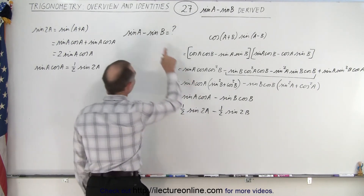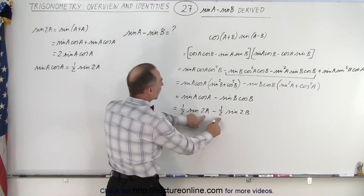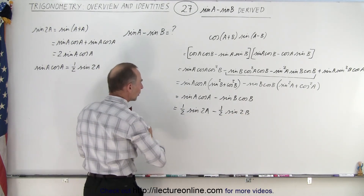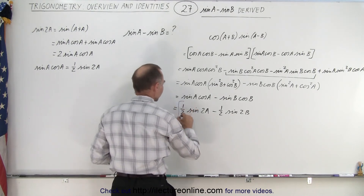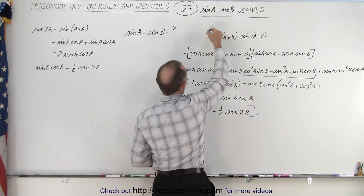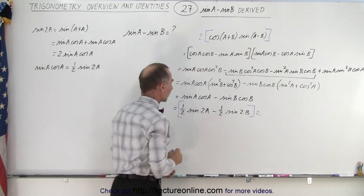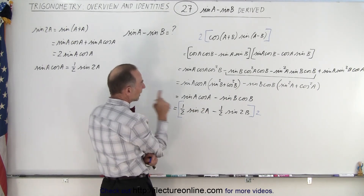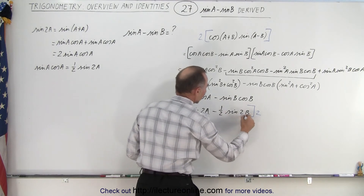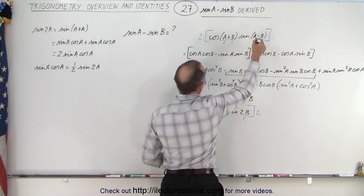Notice I almost have what I want over there, but I don't want the one halves, and I only want the single angles a and b. So if I multiply this by 2, I need to multiply the left side by 2 as well. That gets rid of the one halves. But then I need to divide each angle by 2, so I divide this angle by 2 and this angle by 2, which means I need to divide these angles by 2 as well.